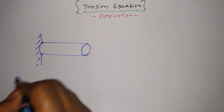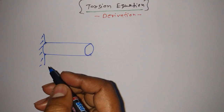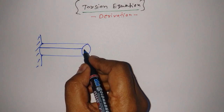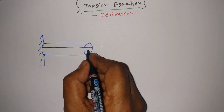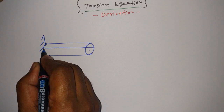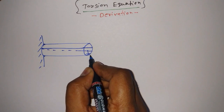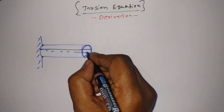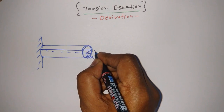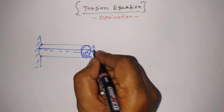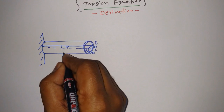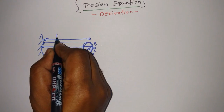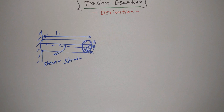Before we start, let me draw a cylinder because this is important — without this diagram it's impossible to explain the torsion equation. One side of this cantilever cylinder is fixed and the other is free. Suppose its radius is R, it is circular, the angle is theta, points are A, B, and C, and the angle gamma is known as shear strain. The length of this cylinder is L.